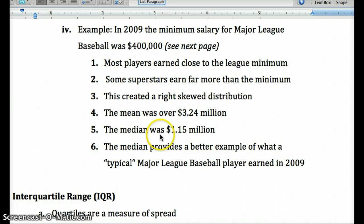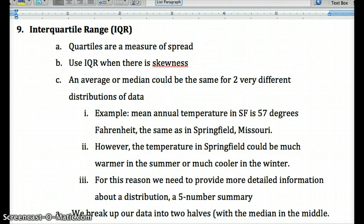While the median gives us a better example of where the middle is of our distribution, and really where more data is, around $1 million, just slightly over $1 million. So it provides a better example of what a typical player would have earned in 2009.